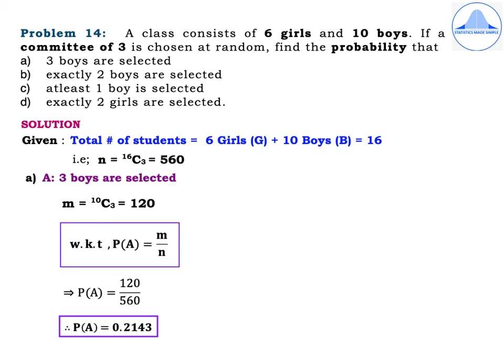Problem 14. A class consists of 6 girls and 10 boys. If a committee of 3 is chosen at random, find the probability that: first subdivision, 3 boys are selected; second subdivision, exactly 2 boys are selected; third subdivision, at least 1 boy is selected; fourth subdivision, exactly 2 girls are selected. Given: total number of students = 6 girls plus 10 boys = 16. N = 16C3 = 560.